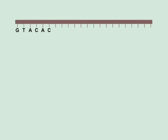A single strand of DNA can alphabetically be sequenced by the letters A, C, T and G.